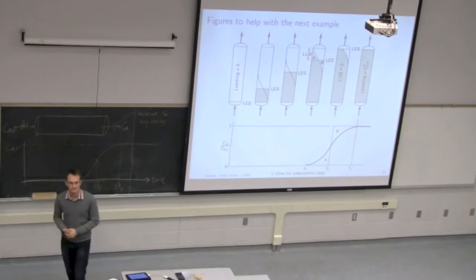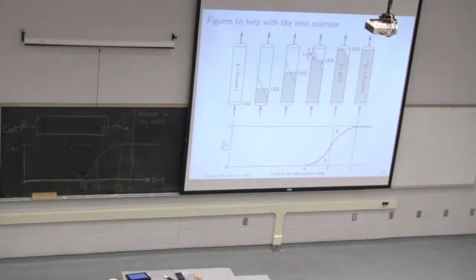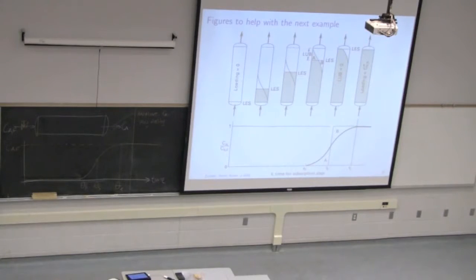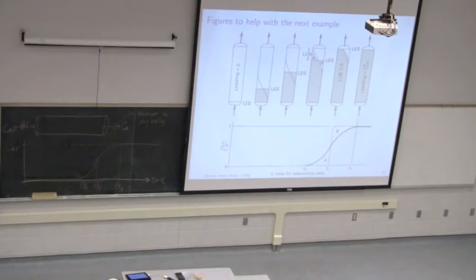A student asks: you're feeding from the bottom up — what is normally driving this, like a pressure drop? The instructor confirms: you're feeding flow through a pump driving up through. The student asks: if you cut off the valve, wouldn't that cut off the pressure drop as well? The instructor clarifies: what's coming in is a mixture of A and the carrier. If you cut off the valve, there's no more flow through the bed.